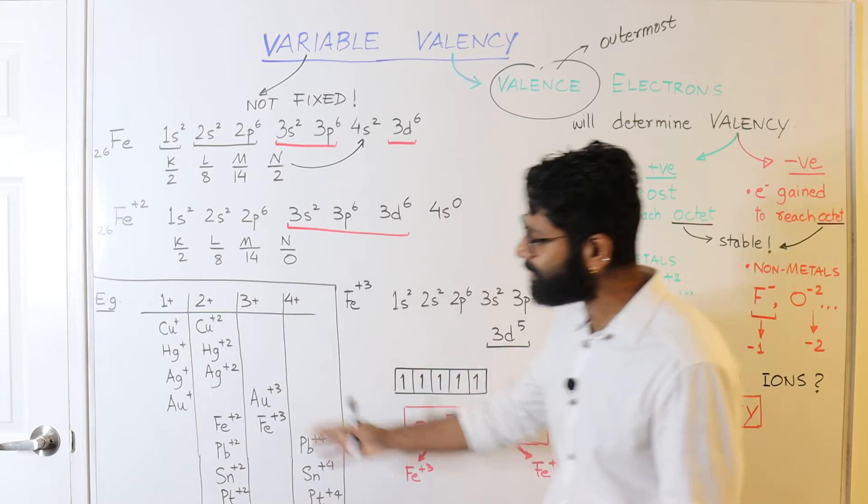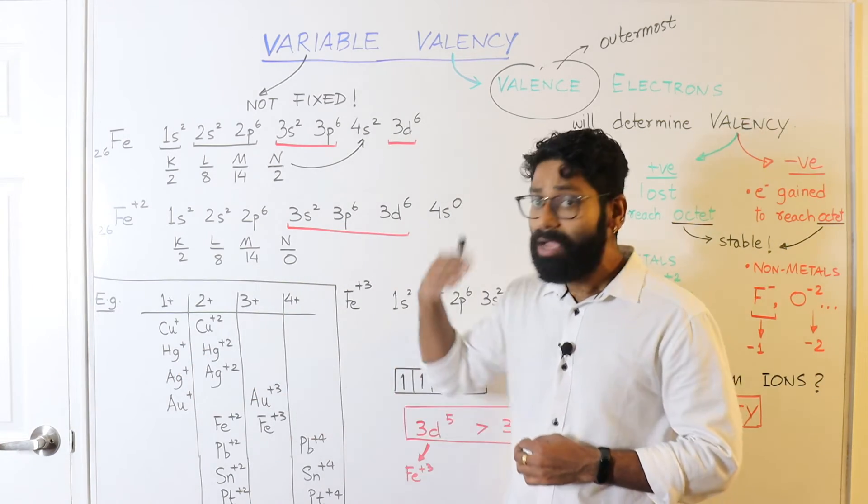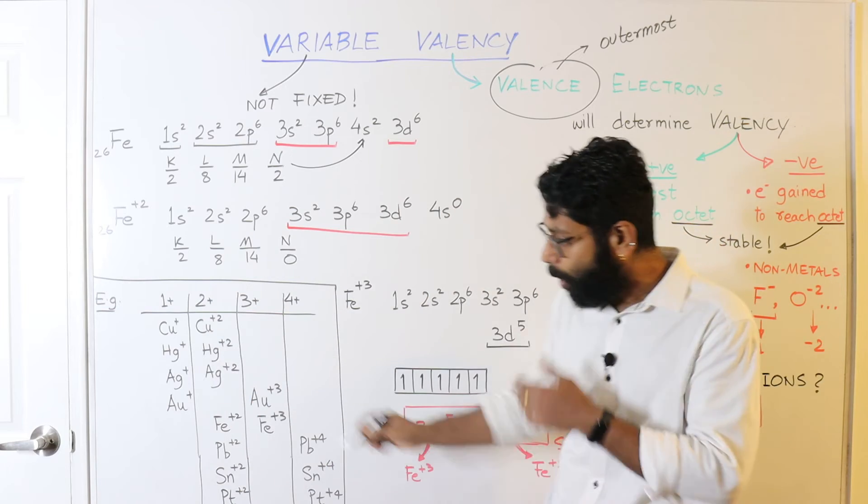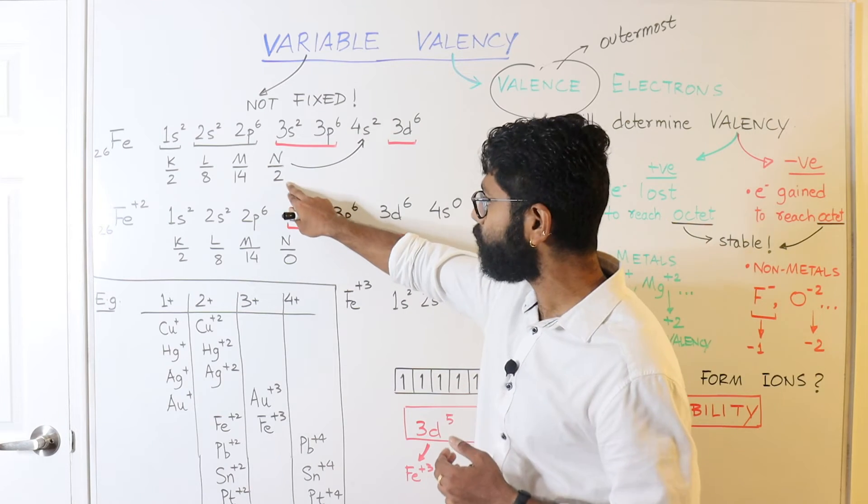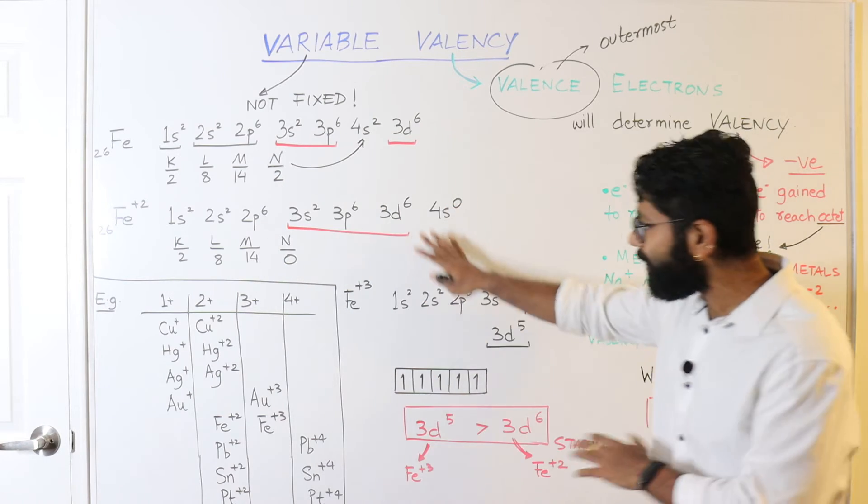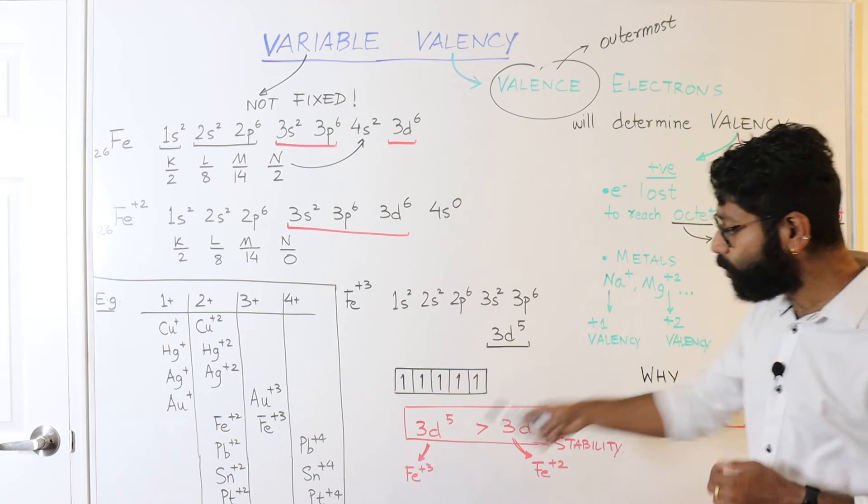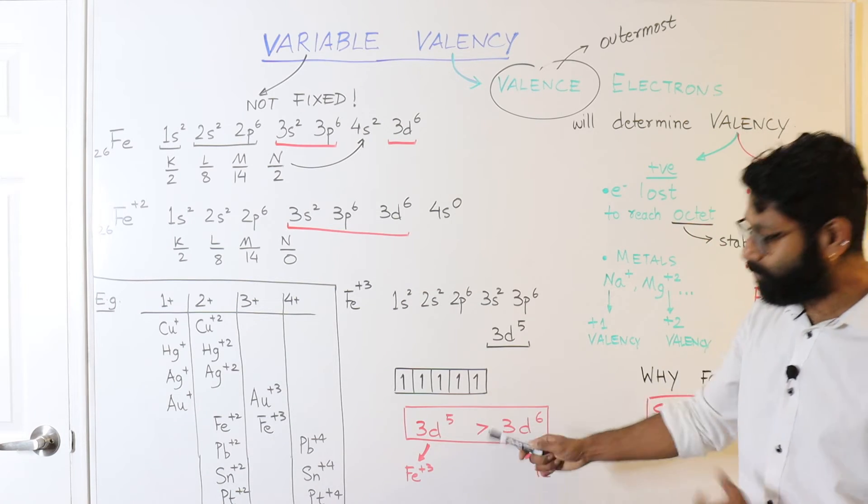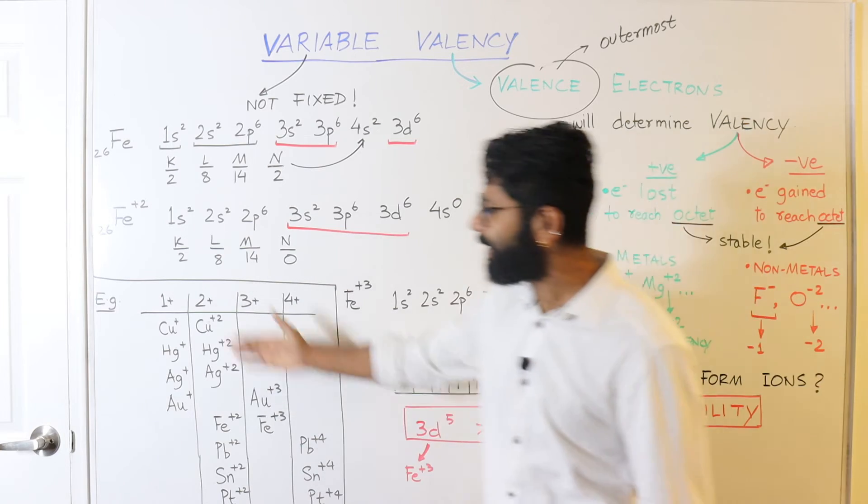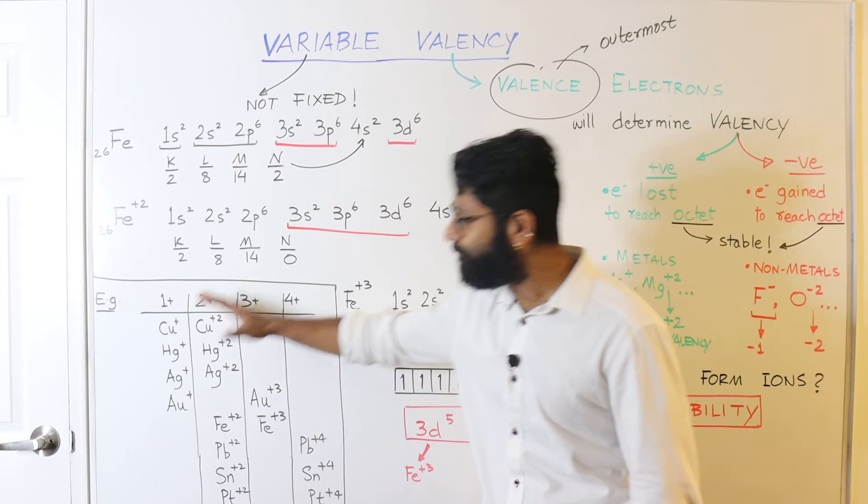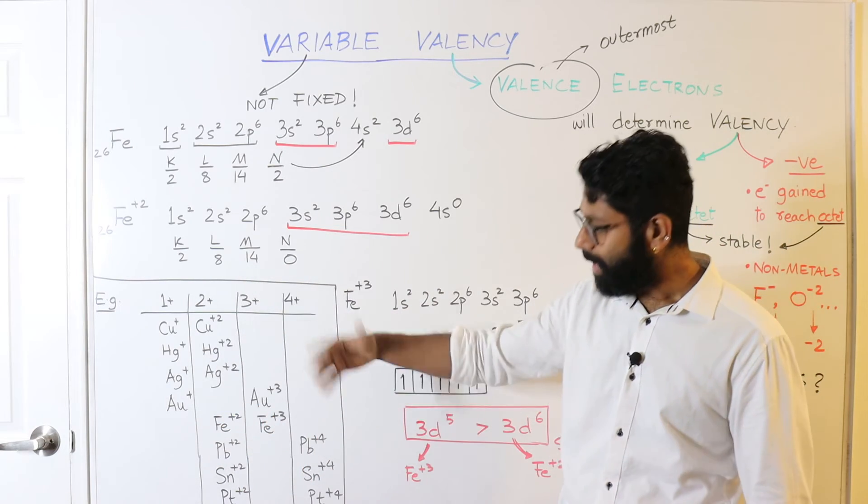So this is the reason why some elements will exhibit variable valencies because all these variable valencies are different stages of stability. Now, if you lose two electrons, that is one level of stability. But you lose one more electron in iron 2+, to get to 3d5. This becomes more stable. Similarly, with the electronic configuration, we can explain the variable states of different kinds of elements.